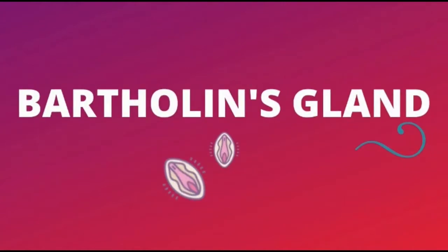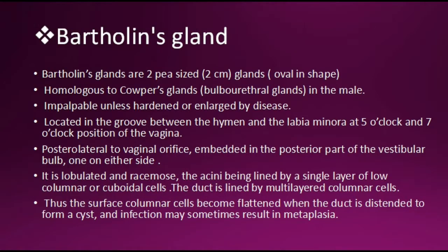Hello everyone, today I'm going to teach you about Bartholin's gland. Bartholin's glands are two pea-sized glands which are two centimeters and oval in shape, homologous to Cowper's gland or bulbourethral glands in males. The Cowper's gland is also a pea-sized gland which is situated inferior to the prostate.